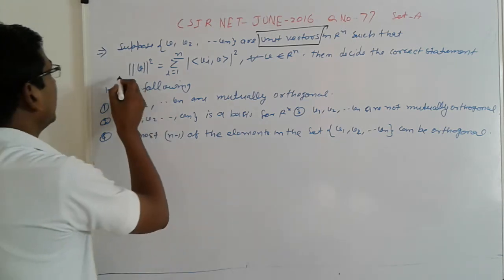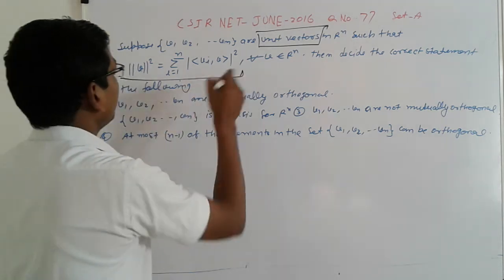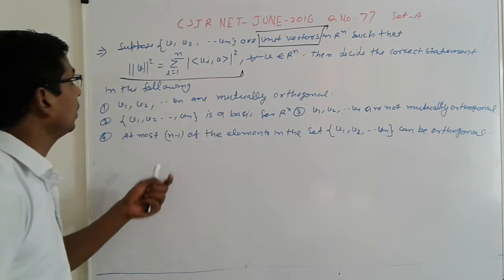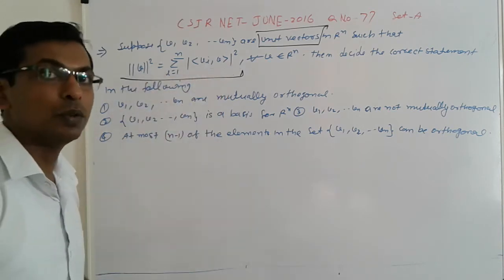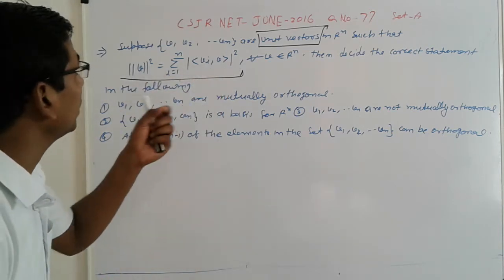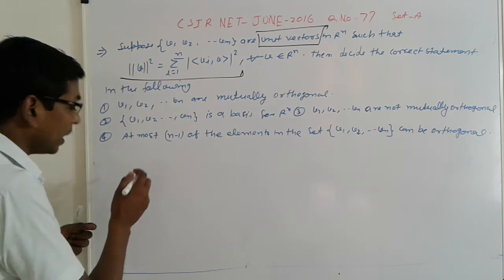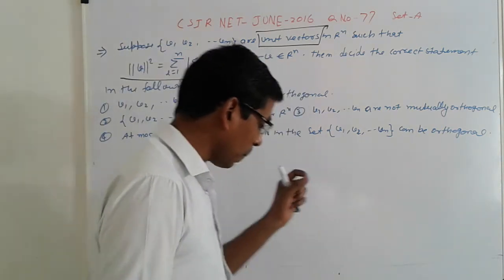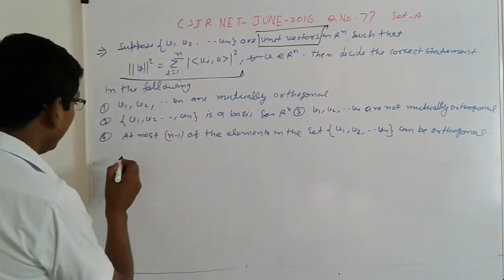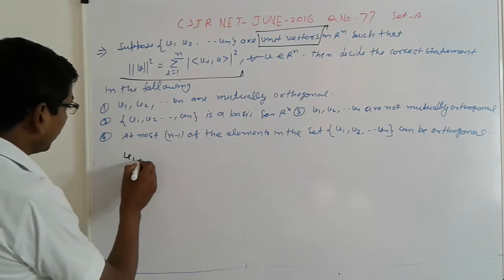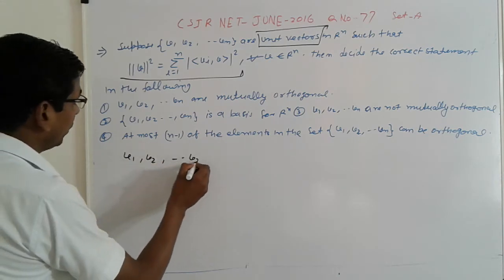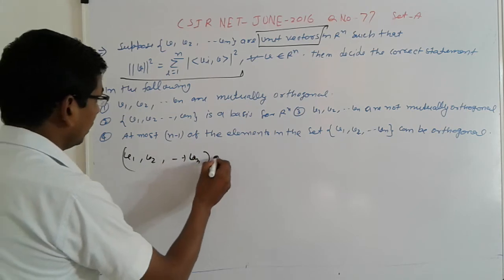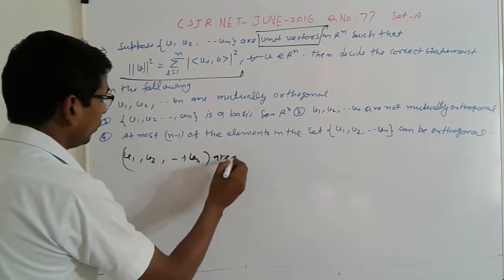So what is the inner product space? Which is the inner product space represents, otherwise it is a norm. So use of this property — simple and logical. Suppose V1, V2, and Vn are unit vectors.